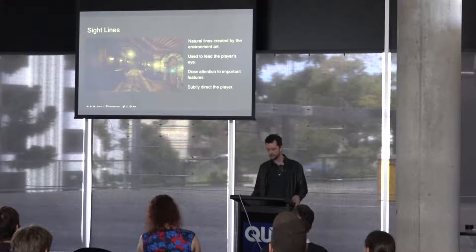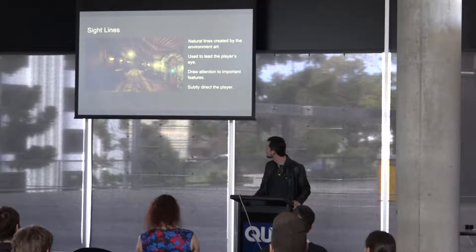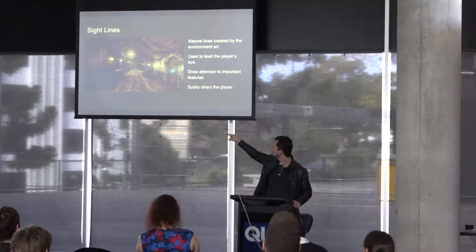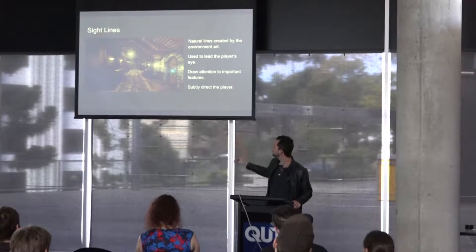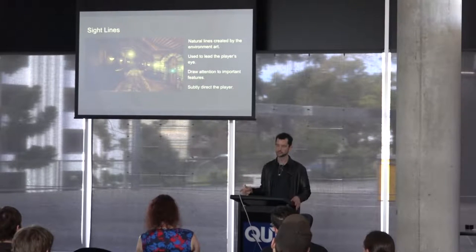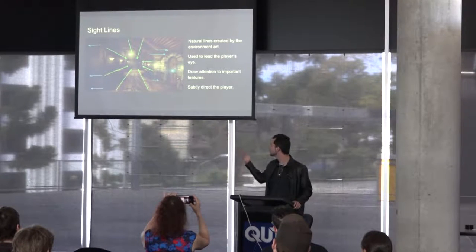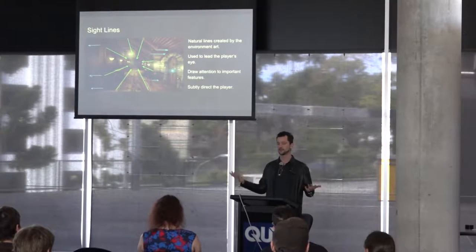First up, sight lines. Sight lines are natural lines created by the environment art which lead the eye in a certain direction. In this example, the carpet points towards the end of the corridor, along with the skirting along the walls, the trail of lights, and even the directionality of the boards along the roof — all pointing towards the master bedroom where I want the player to be drawn. Lines on the sides hint at the big door on the right and the option to turn left as well.